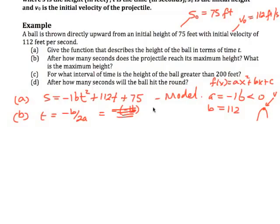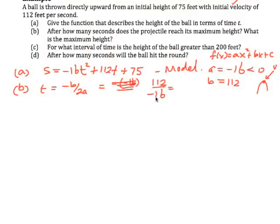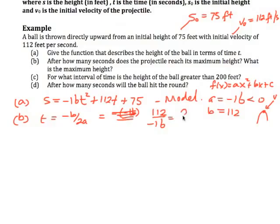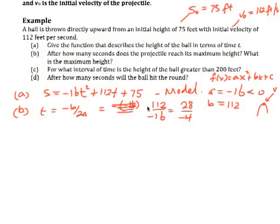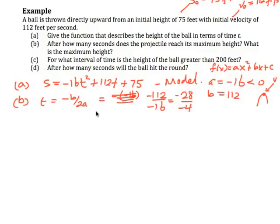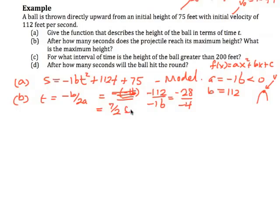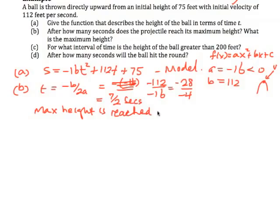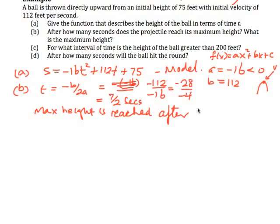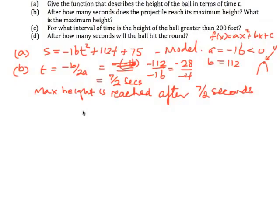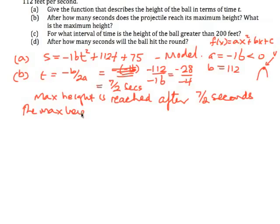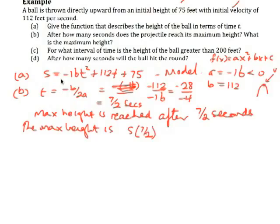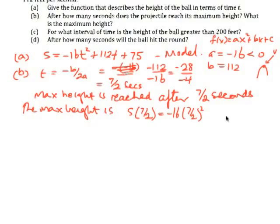The vertex is given by t equals negative b over 2a, which is the t value for the vertex. This will be negative of b — now b is equal to 112 — so it's going to be negative 112 over 2 times negative 16, which is 112 over negative 16. We can cancel this down by 4s: that will be 28 over negative 4, and it's negative over negative because it's negative b. So this will be equal to 7 over 2 seconds. The maximum height is reached after 7/2 seconds.